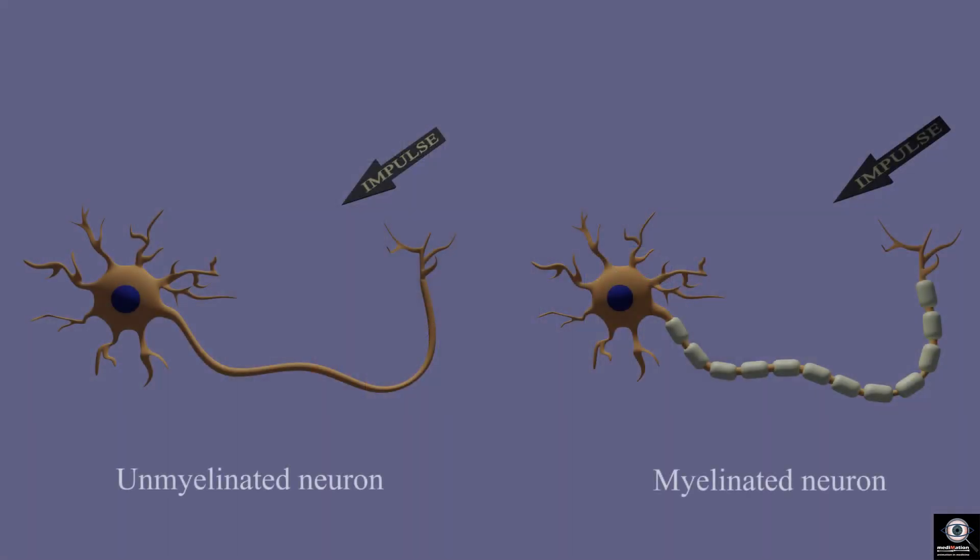Myelinated nerves conduct impulses much faster than unmyelinated nerves. This is because the current jumps from one node of Ranvier to the next in the myelinated nerves.